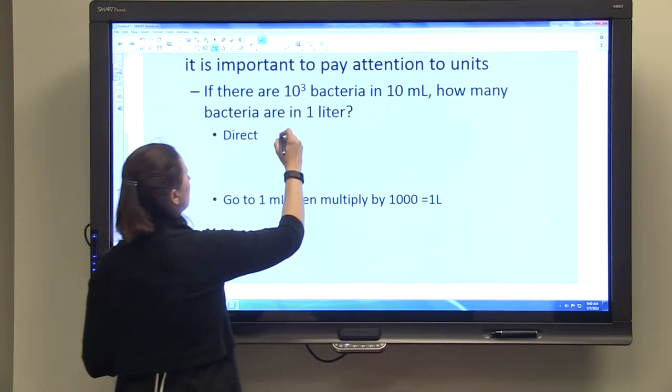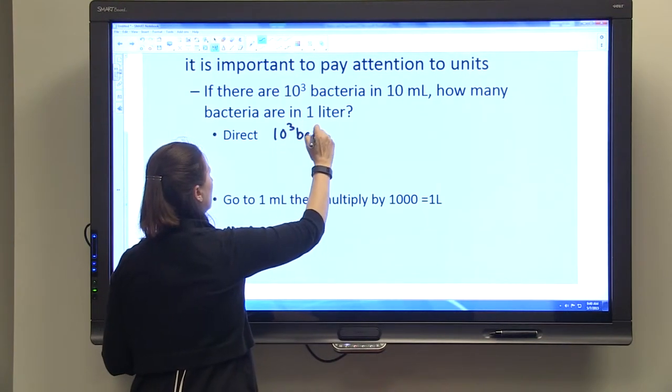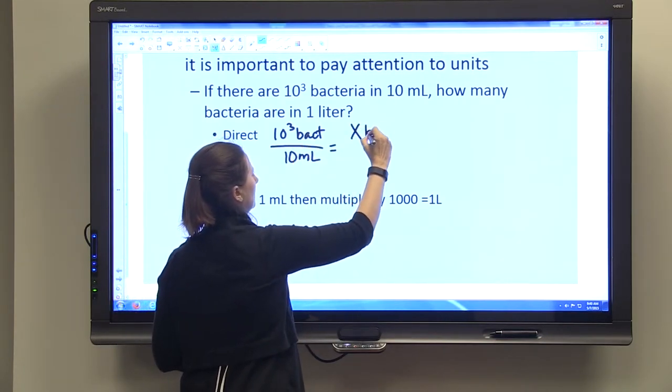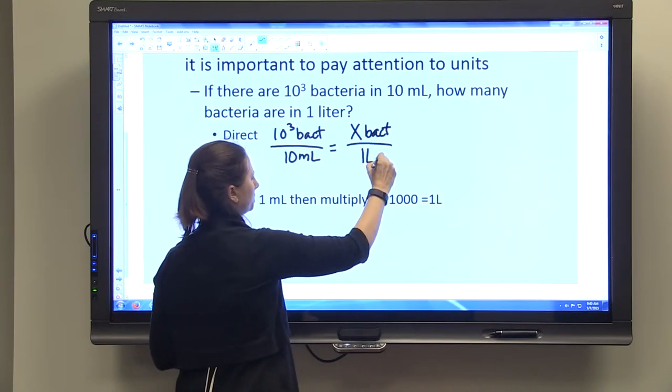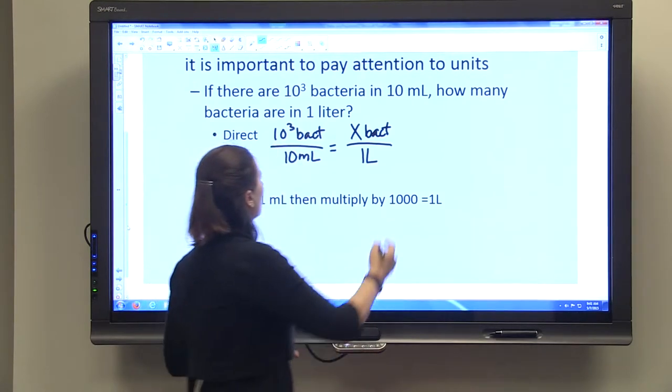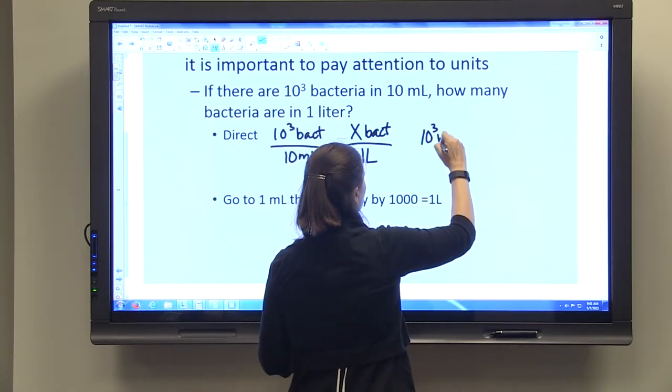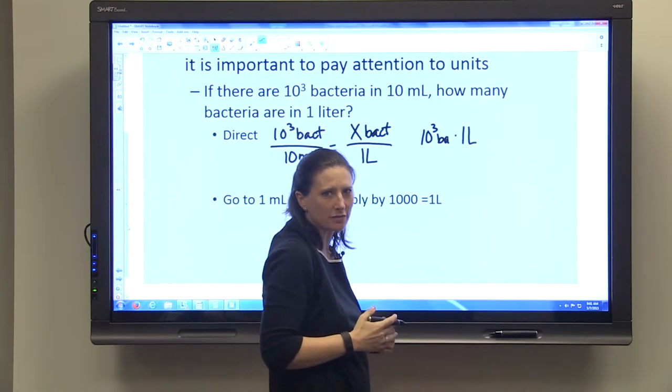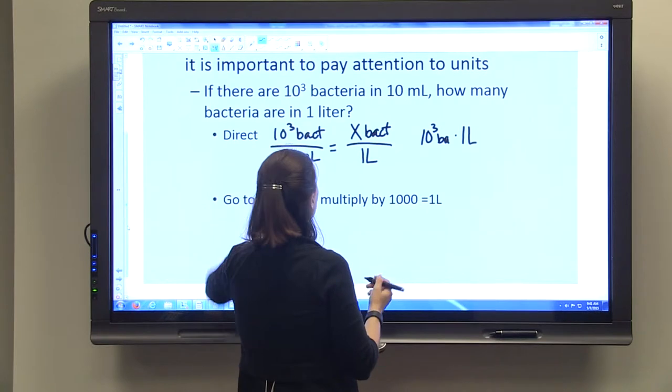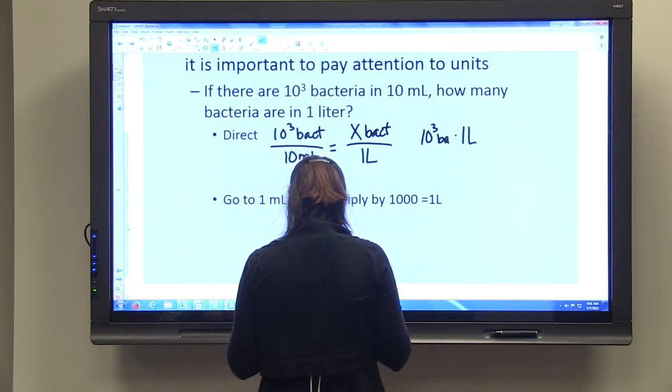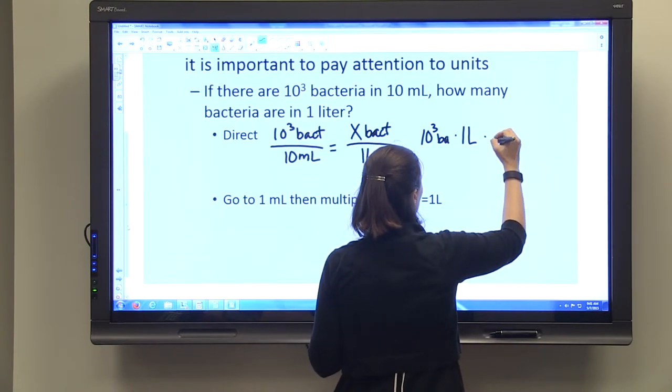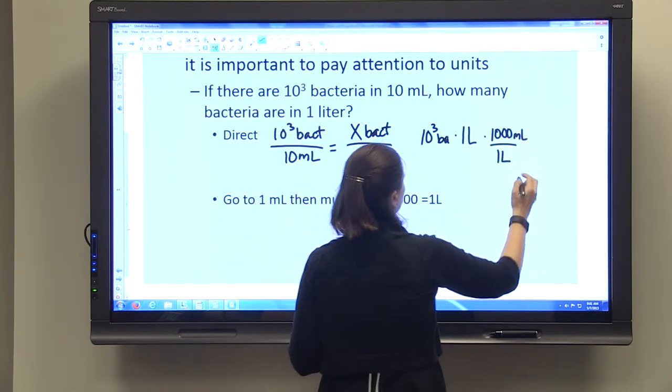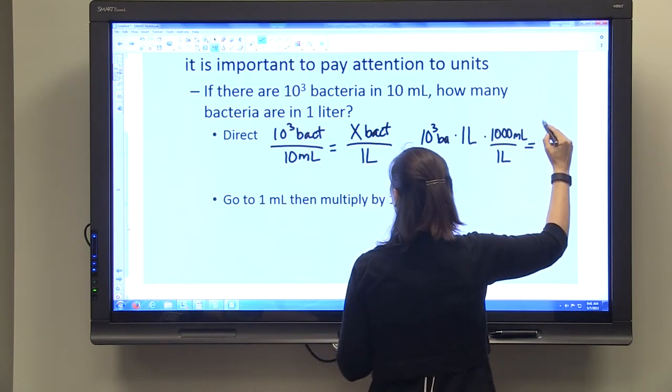If we're going to directly solve it, we just set up our proportion: 10³ bacteria in 10 mL equals how many bacteria in 1 liter. You're going to cross multiply: 10³ bacteria times 1 liter. There's a thousand mL in 1 liter, and then you've got X bacteria times 10 mL.